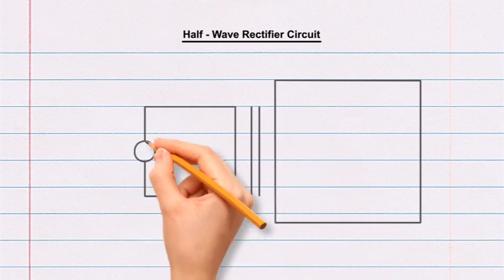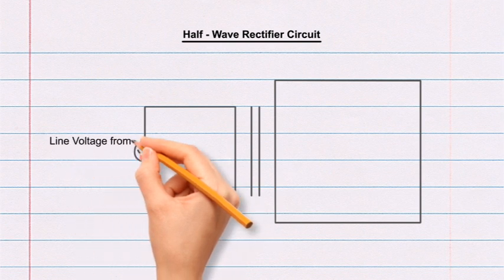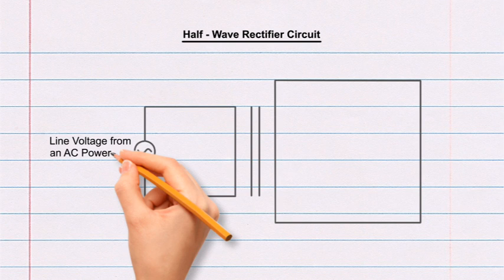On the left vertical line of the smaller rectangle, draw a circle in the middle of the line. Inside the circle, draw the letter S at a tilted angle. Label it as line voltage from an AC power on the left-hand side of the circle.